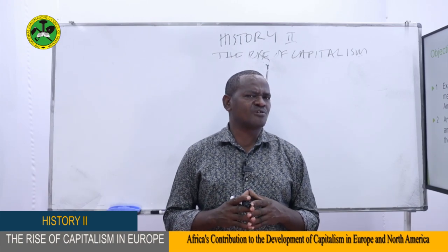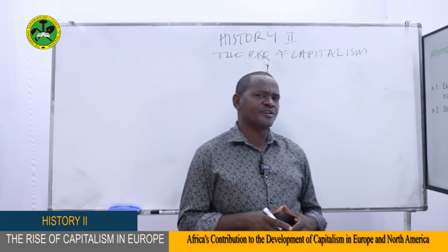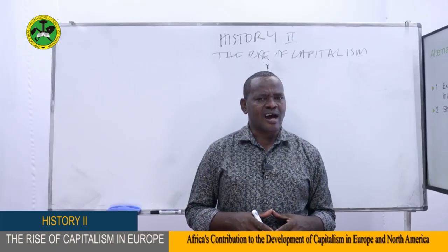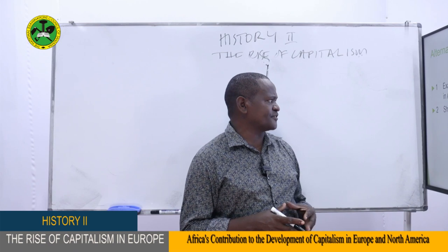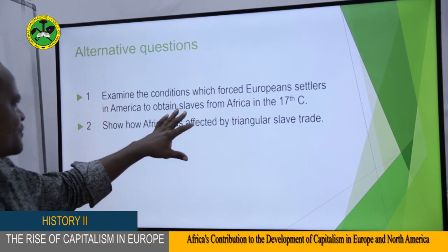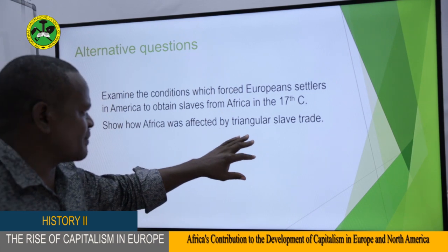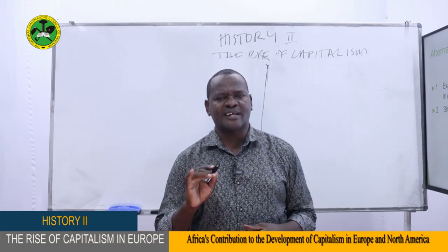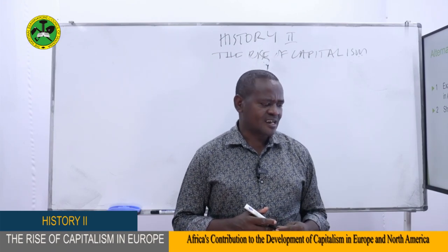Make sure that at the end of our lesson today, you are able to achieve these two objectives. We also have some questions. The first question is: examine the conditions which forced European settlers in America to obtain slaves from Africa in the 17th century. The second question is: show how Africa was affected by triangular slave trading. Make sure you are able to attempt these questions at the end of our lesson, along with other questions which might also come from this subtopic.